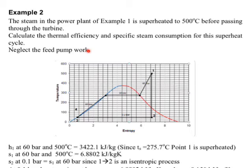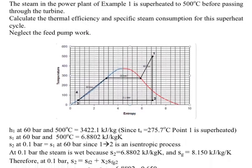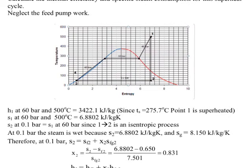Let's look at the enthalpy we need to compute at 60 bar and 500°C. Now the steam is superheated, so let's look at the steam table for superheated steam at 500 degrees centigrade.